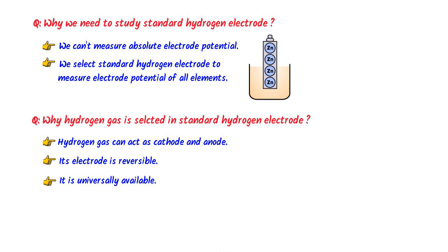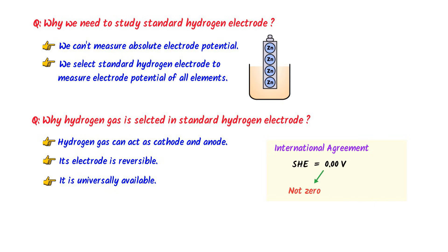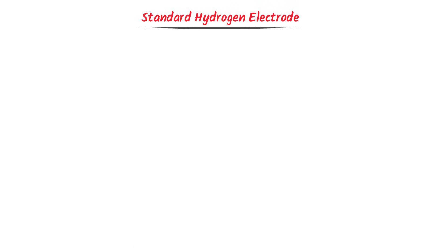Therefore we use hydrogen gas in the standard electrode. By international agreement, the Standard Hydrogen Electrode is assigned a value of 0.00 V. This value is not measured but assumed — by convention we consider the Standard Hydrogen Electrode to be equal to 0.00 V. Now we will learn all about the Standard Hydrogen Electrode.